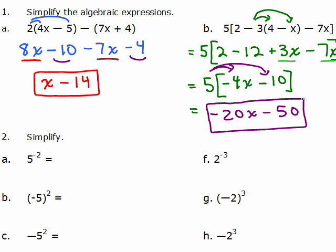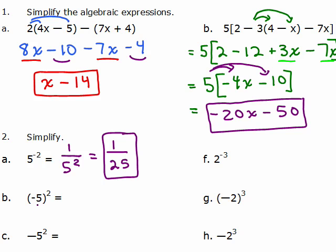Number 2a: you have to remember the meaning of negative exponents. 5 to the negative 2 means 1 over 5 to the positive 2, which is 1 over 5 squared. 5 squared means 5 times 5, so this is 1 twenty-fifth. For the second part, we have negative 5 in parentheses, which shows we're squaring the negative 5. So negative 5 times negative 5 is positive 25.